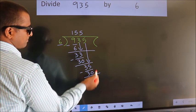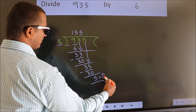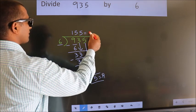No more numbers to bring it down. So we stop here. This is our remainder. This is our quotient.